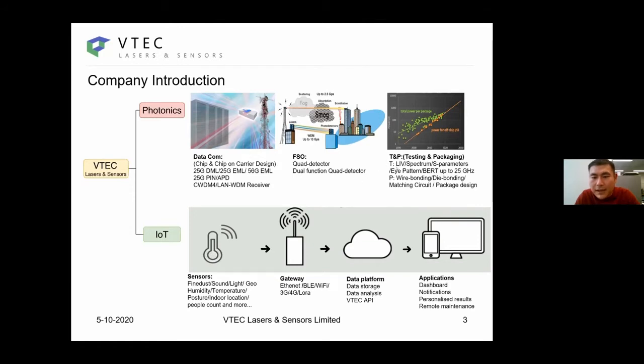In the meantime, the third part of our photonic activity is testing and packaging. When we have the chip designed and manufactured by the fab, we have in-house capacities to have the device characterized. We can do LIV spectrum measurement and S-parameter eye pattern bit error rate measurement up to 25 GHz. For packaging, we can do wire-bonding and die-bonding, matching circuit design and packaging design.